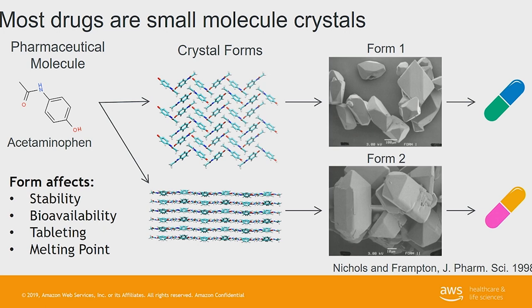For example, the green molecule might be stable for six or twenty years in your closet, and you could still take it and in two minutes your headache would be gone. Whereas this pink molecule might actually have to be refrigerated to be kept in a useful form, and then might not even work — it might take six months to work because the crystal is so stable the drug never actually releases into your body. So drug developers need to know that they're working with a form of the molecule that's actually going to go into the body.